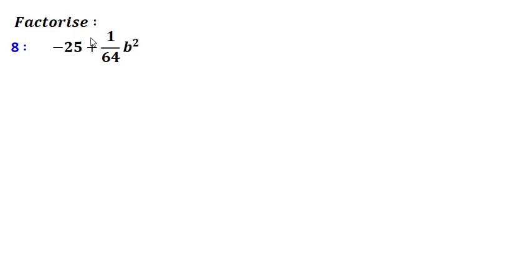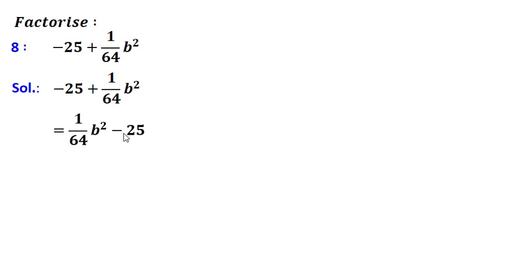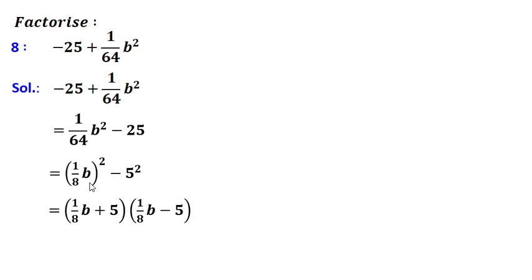Eighth question: minus 25 plus (1/64)b squared. First I will rearrange the terms and write this as (1/64)b squared minus 25. This gives me (1/8 · b) squared minus 5 squared, and I will get (1/8 · b + 5) into (1/8 · b - 5).